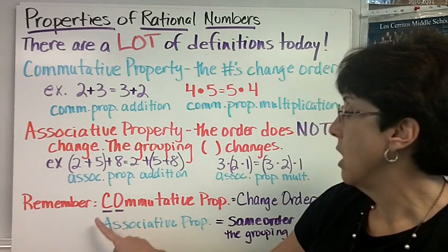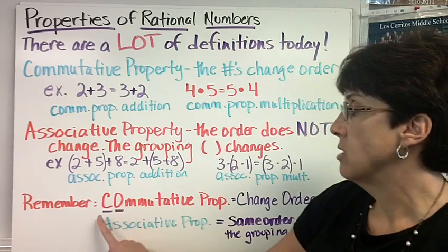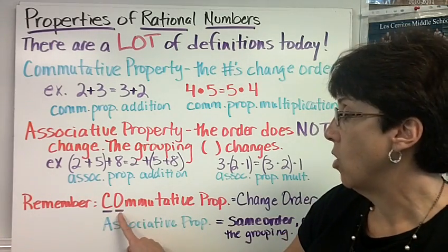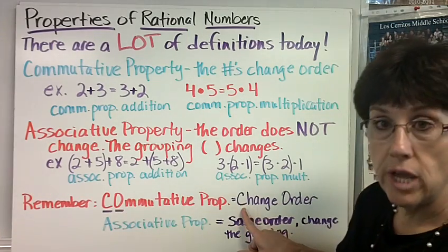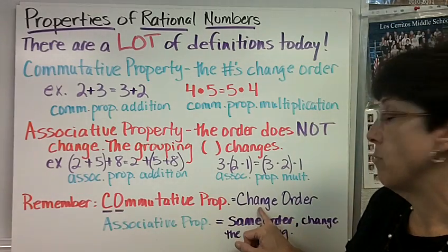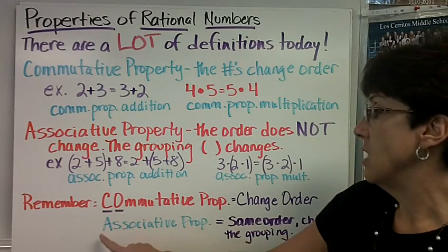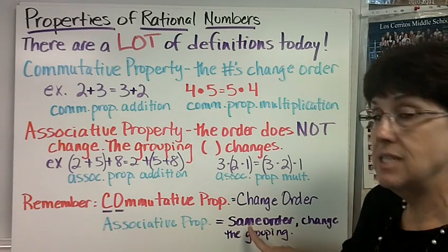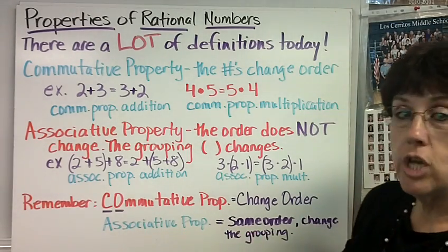Here's a way to remember. Commutative property starts with a C, O. The C stands for change, the O stands for order. So when it's commutative property, the numbers change order. The associative property is the same order, we change the grouping.